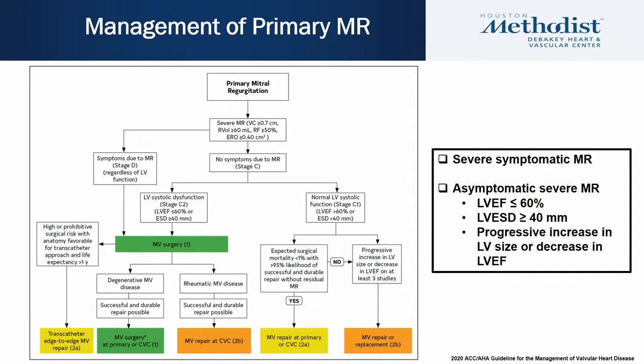Management of primary MR per the 2020 ACC/AHA guidelines: severe symptomatic patients have a class I indication to intervene. For asymptomatic patients with severe MR, intervention is indicated for LVEF ≤60%, LV end-systolic dimension ≥40 mm, or progressive increase in LV size or decrease in LVEF across three serial studies. Serial echocardiographic follow-up is important to monitor these parameters.